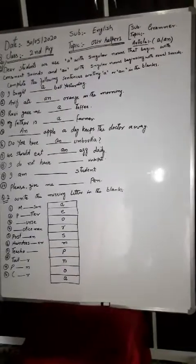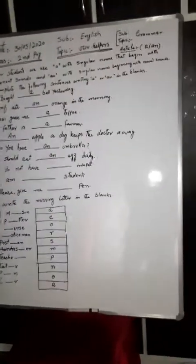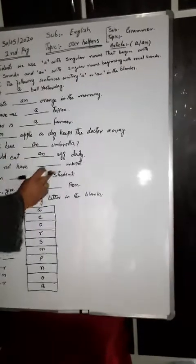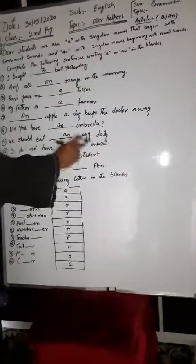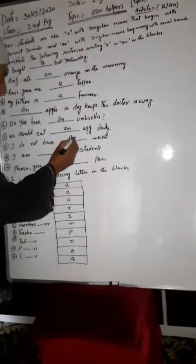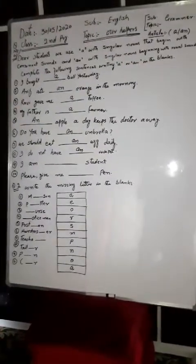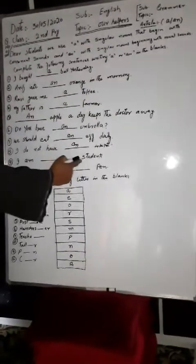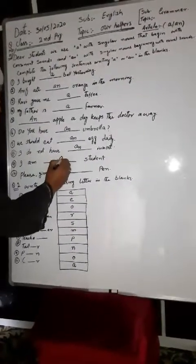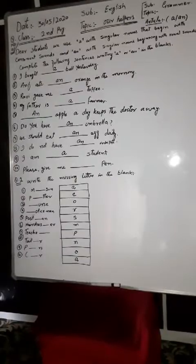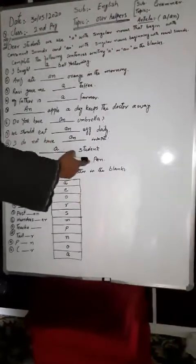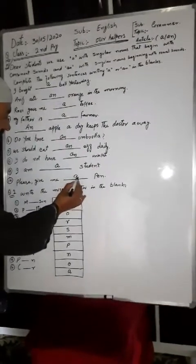I do not have an ink pot. Ink pot means ink pot. The word starts with 'i', a vowel. I am a student. Student is a word which has consonant, so 'a student'. Then please give me a pen. Pen uses consonant, so 'a pen'.